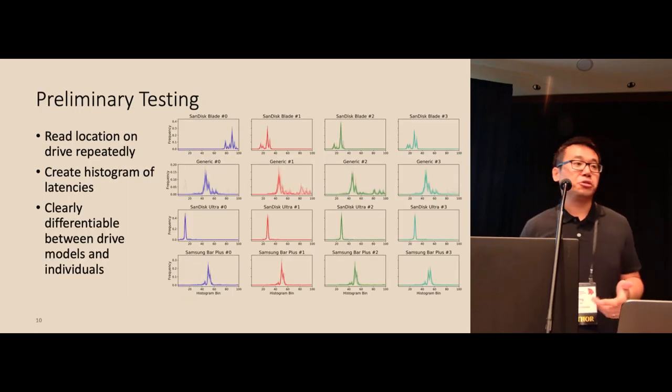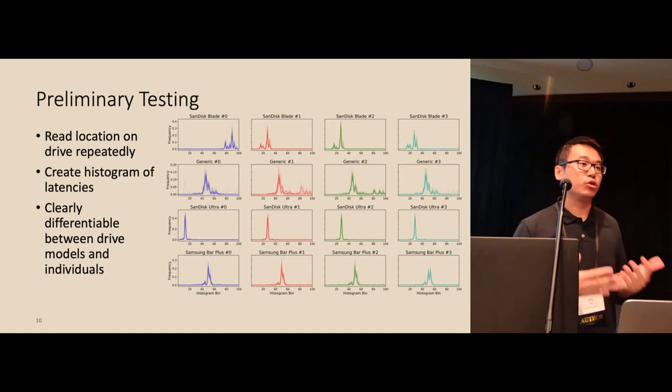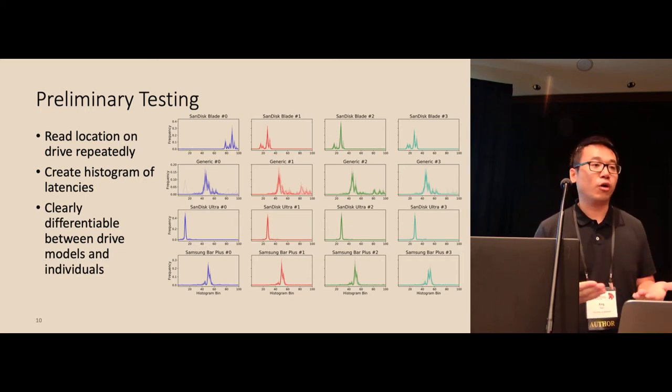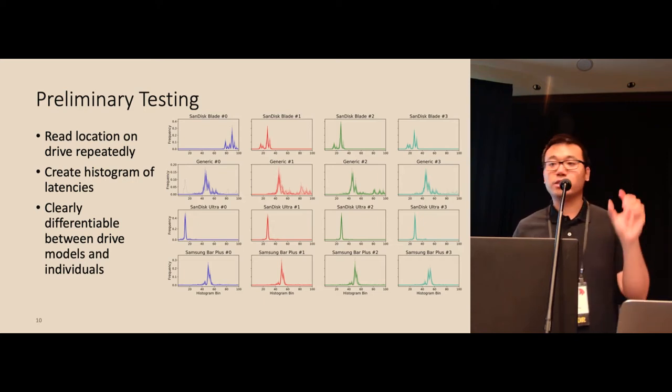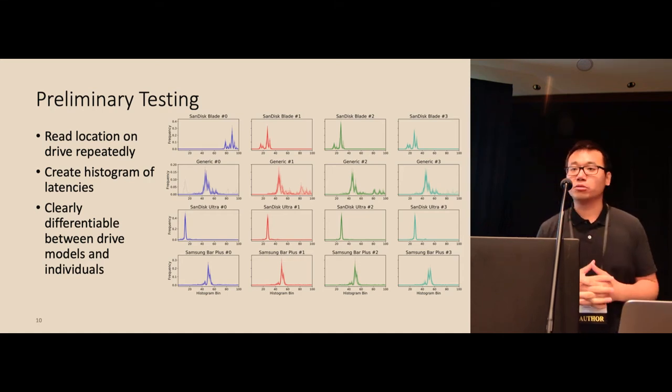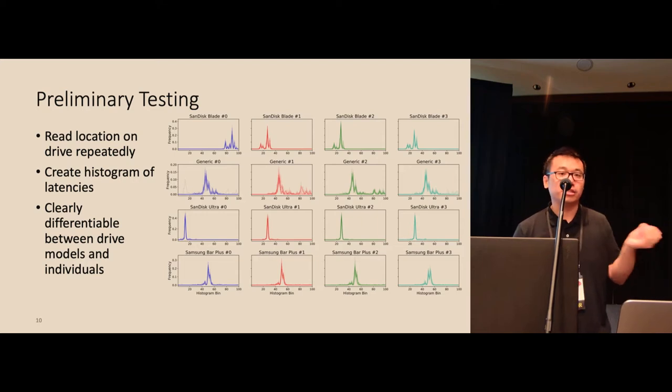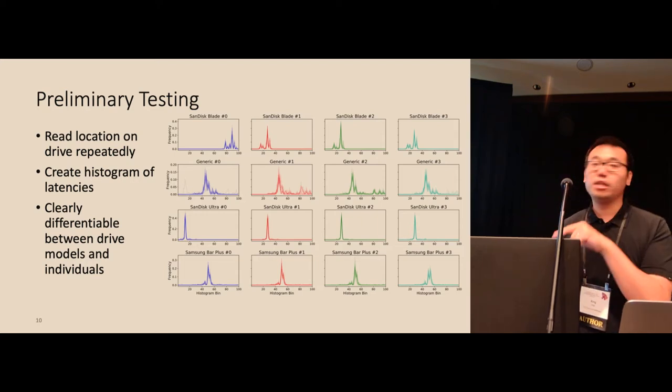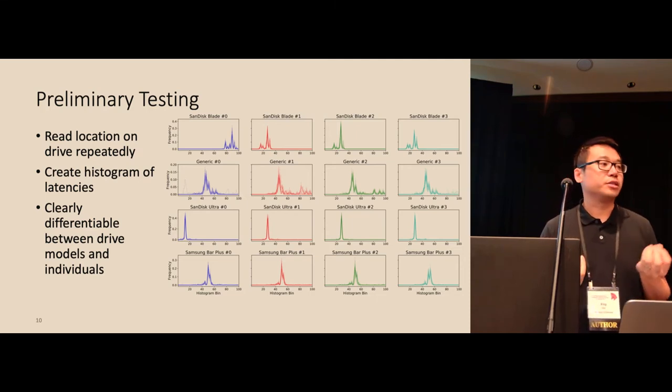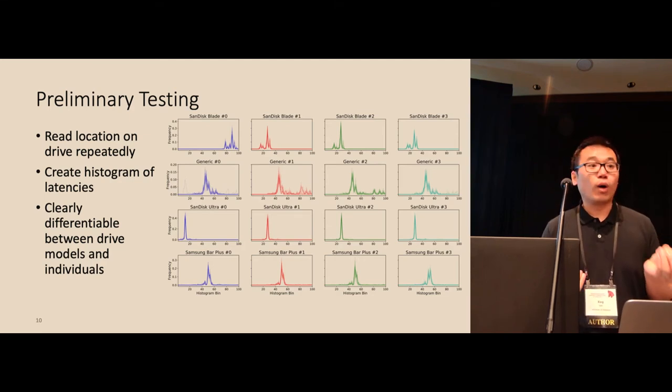This figure shows the preliminary result. Particularly, we measured a single location multiple times and then created a histogram of each device. In this experiment, we measured 16 different USB devices belonging to four different models. Each row is a device model and each column is a specific device belonging to that particular model. From this figure, we can immediately see some interesting results because clearly the shape of each row differs from each other, so we can definitely utilize this method to identify different device models. But if you look a little closer to the device graphs, you can actually find that even though those devices belong to the same device model, their graphs still differ slightly. This is encouraging because we might be able to explore this to identify devices belonging to the same model.